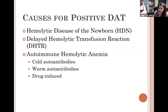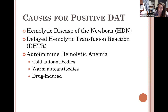Some known causes for a positive DAT warrant further investigation. One we've discussed is hemolytic disease of the newborn — a positive DAT on cord blood or peripheral blood from a fetus. This can be due to ABO incompatibility where mom is type O and baby is A or B, or due to another IgG antibody such as D, Kell, or little c — any IgG antibody capable of crossing the placenta.